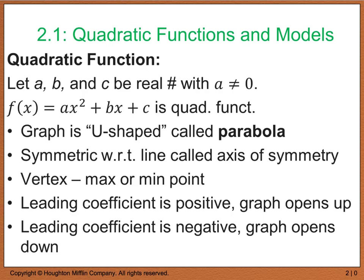A certain type of polynomial function is a quadratic function. A quadratic function is in the form ax squared plus bx plus c, and its graph is u-shaped — we call that a parabola. The symmetry of a parabola is with respect to the axis of symmetry. For y equals x squared, the parabola is centered at the origin, so the axis of symmetry is the y-axis. If you shift it over, say your axis of symmetry is at x equals 3, then that line becomes the axis of symmetry.